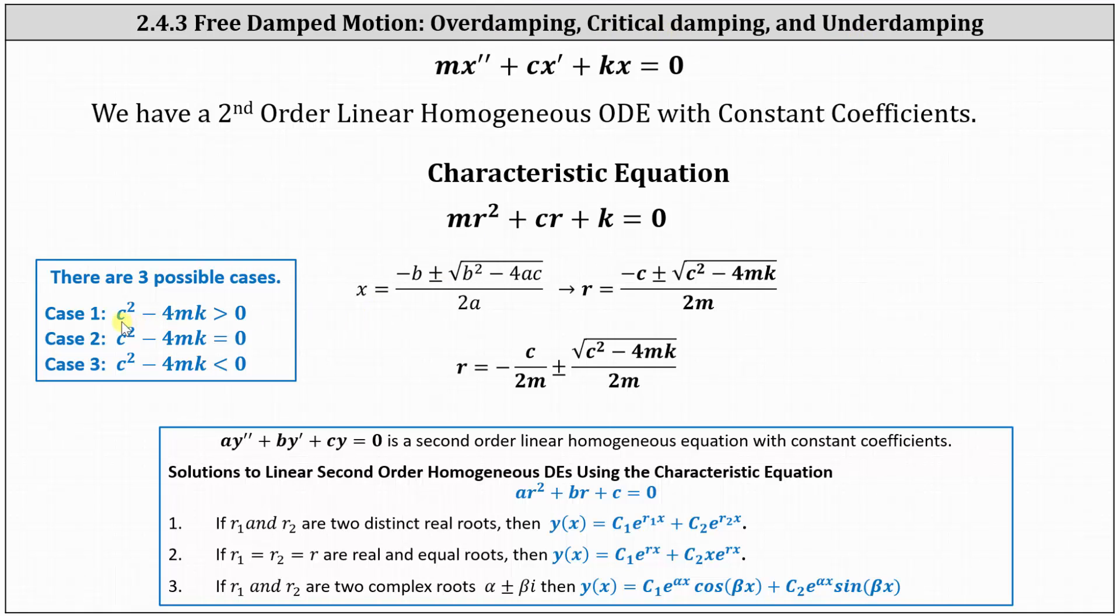When the discriminant c squared minus 4mk is greater than zero, we have overdamping. When it equals zero, we have critical damping. And when it's less than zero, we have underdamping. Let's take a look at each case.